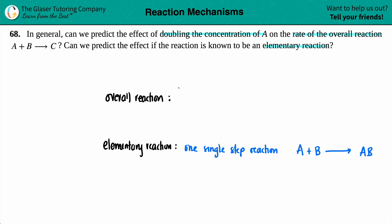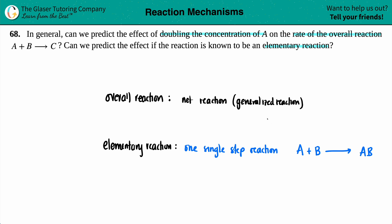Now, an overall reaction — think of it as overall, like a general overview of what's actually happening. An overall reaction is the same thing as your net reaction, where we don't really know how many steps are in the generalized reaction. There could be two steps, three steps, four steps — each single step is classified as an elementary step, and when you combine them all together and see the net reaction, that's an overall reaction.